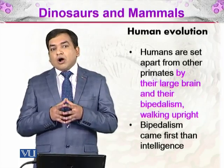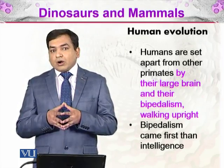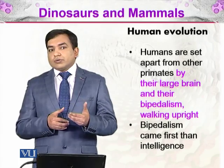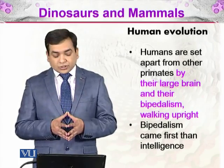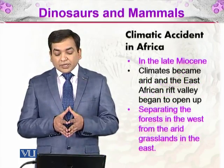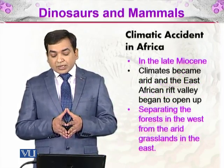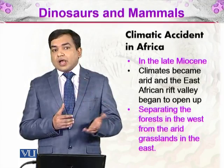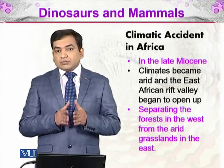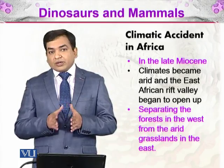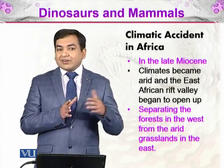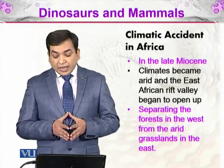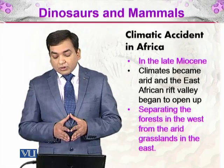The intelligence of these bipedal organisms, our ancestors, was similar to that of earlier orangutans or the chimpanzees' ancestors. There was a climatic accident in Africa: in the late Miocene, the climate became arid. It was first a lush green forest all over Africa, but in the Miocene, the East African Rift Valley formed, separating that lush green forest from the eastern part, which was becoming a grassland — separating the forest in the west from the arid grasslands in the east.